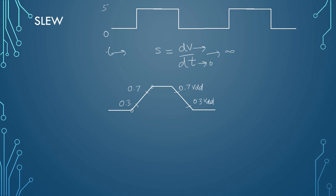Now the slew at the rising edge will be the difference between these two values with respect to time, and slew at the falling edge will be the difference in these two values with respect to time. This will be called as rise slew and this will be called as fall slew.